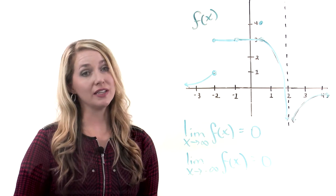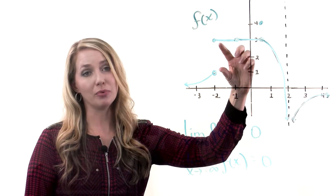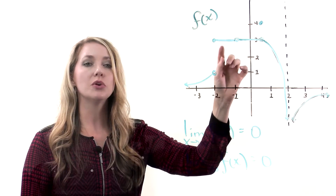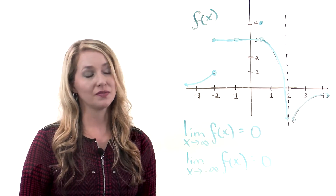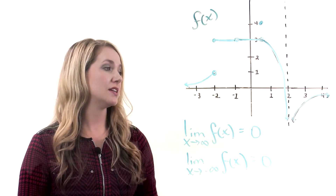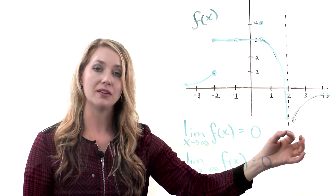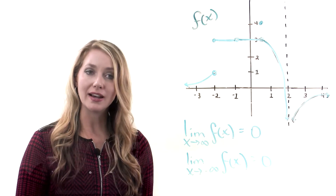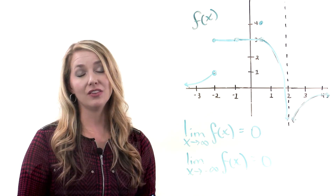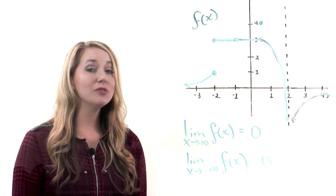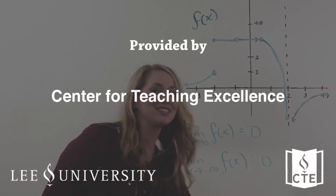To recap, you've seen two reasons why a function may fail to have a limit at a point. The first is a gap in the graph, so the limit from the left does not equal the limit from the right — that's one reason a limit may fail to exist. Another reason is that the function value decreases or increases without bound; we have the notation infinity or minus infinity for that, but it means the limit does not exist and gives a reason why. I hope you've enjoyed learning about limits. Remember, if you're not having fun, you're not doing it right!